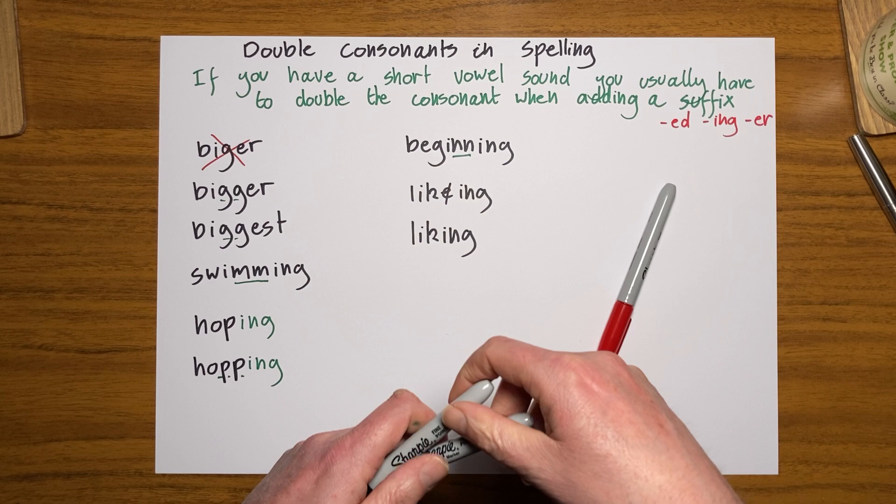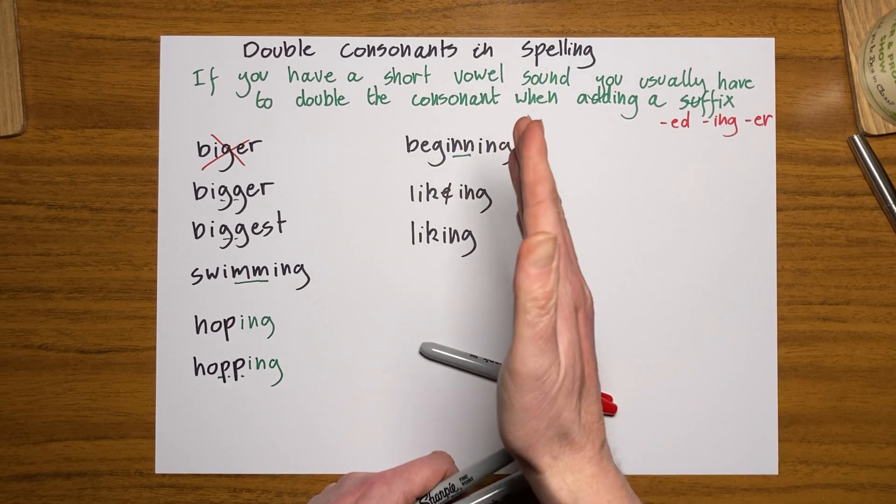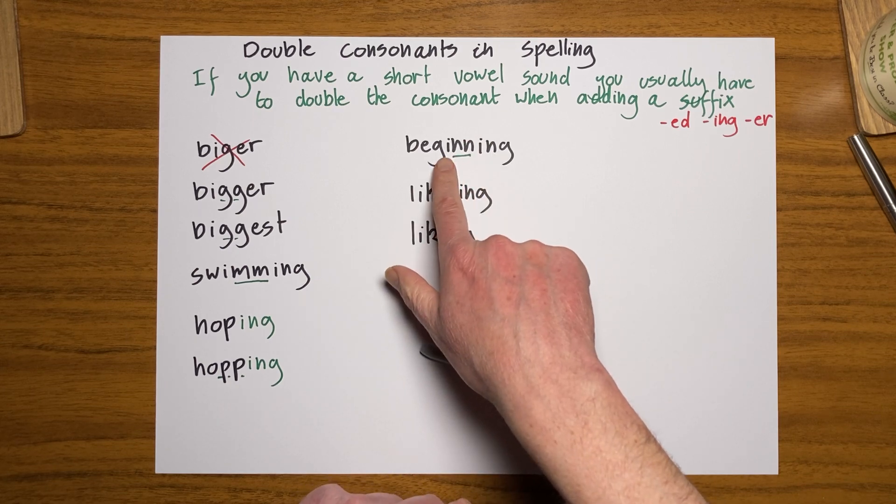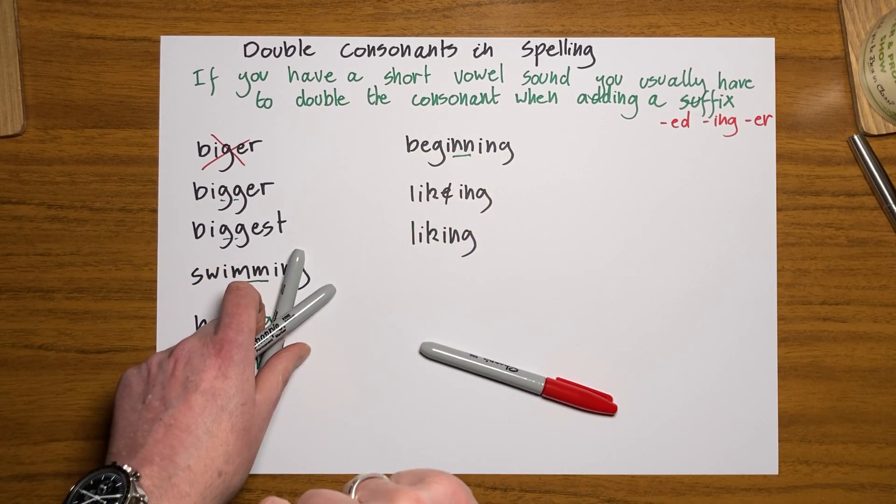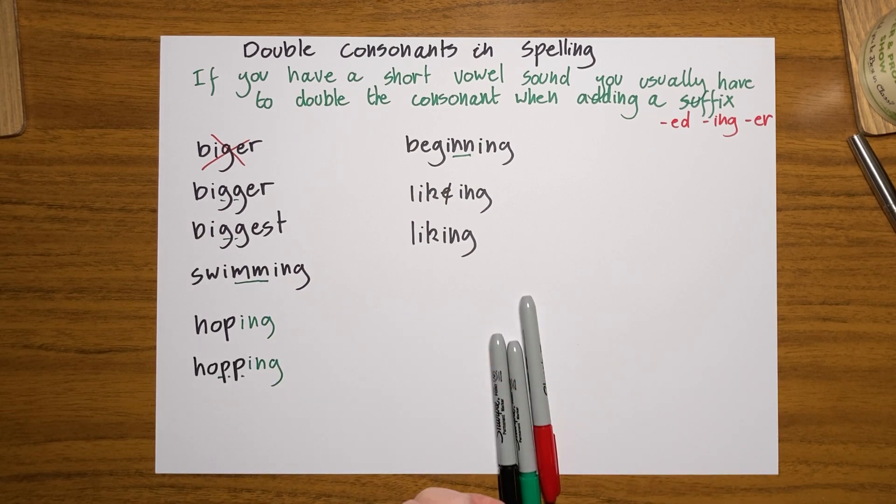Double consonants in spelling - be careful what you're doing. Think about is it a long vowel sound or a short vowel sound. And as long as you get that, you will be absolutely fine. So there you go.